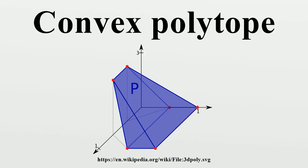This is equivalent to defining a bounded convex polytope as the convex hull of a finite set of points, where the finite set must contain a set of extreme points of the polytope. Such a definition is called a vertex representation.